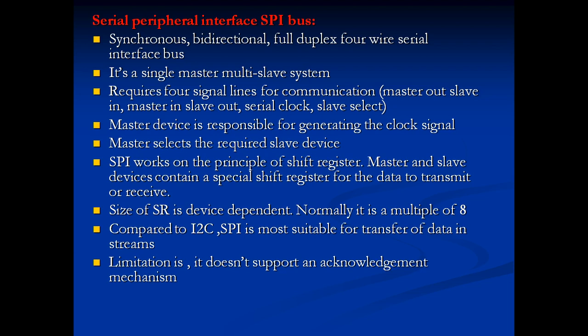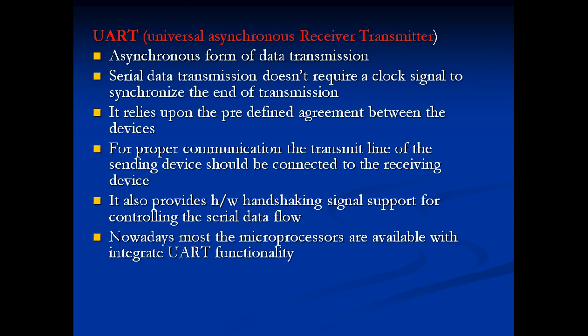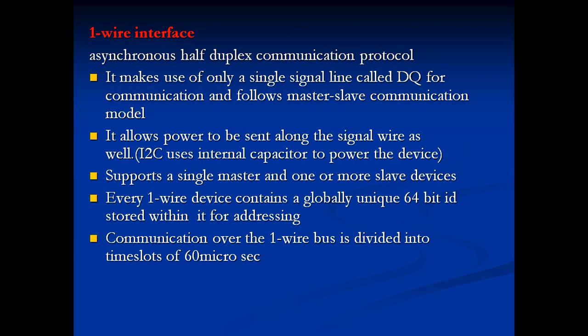Master and slave devices contain special shift registers for data transmit or receive. The size of the shift register is device-dependent, normally a multiple of eight. Compared to I2C, SPI is more suitable for transferring data in streams. The main limitation is it does not support an acknowledgment mechanism — after transmission or reception of data, you do not get any acknowledgment for successful transmission or reception.